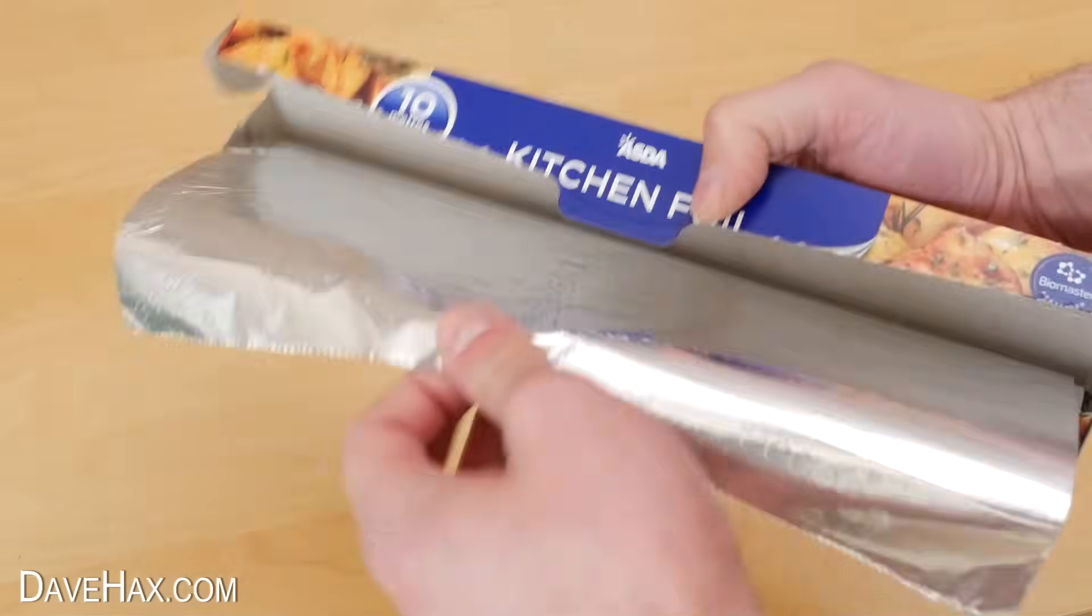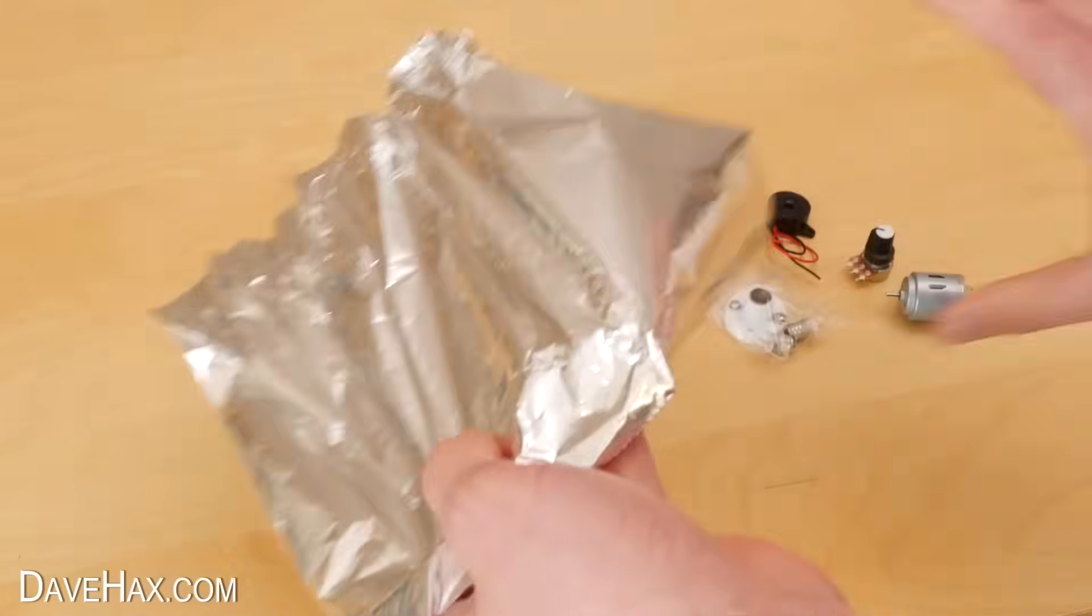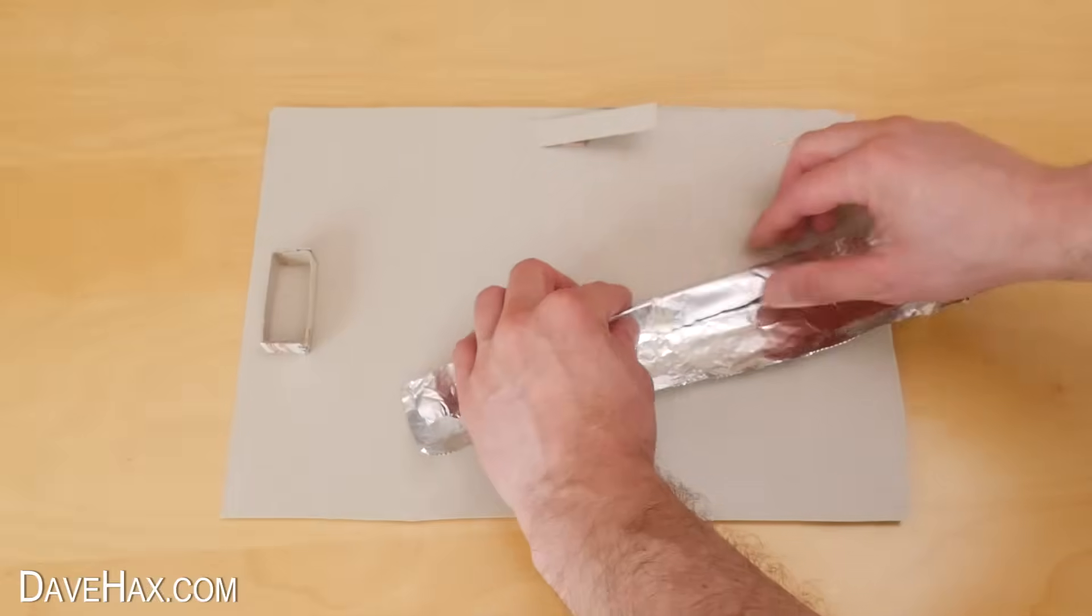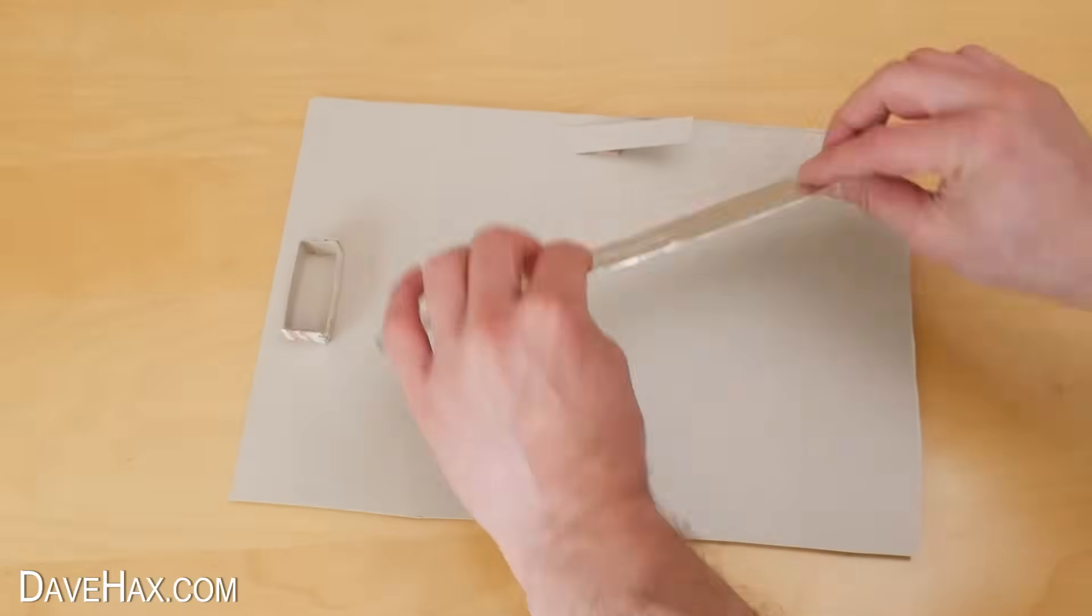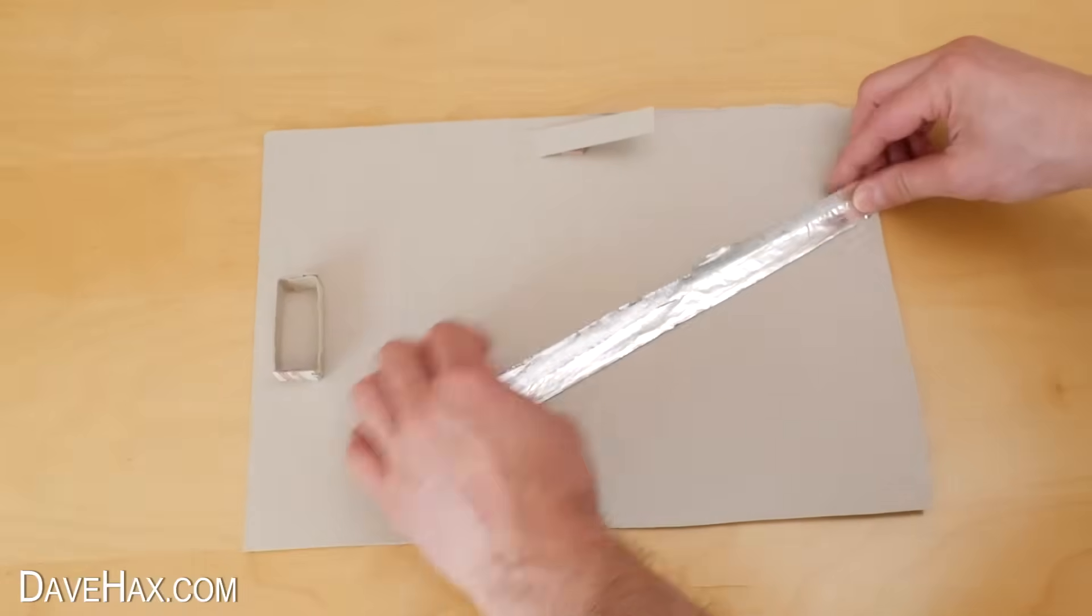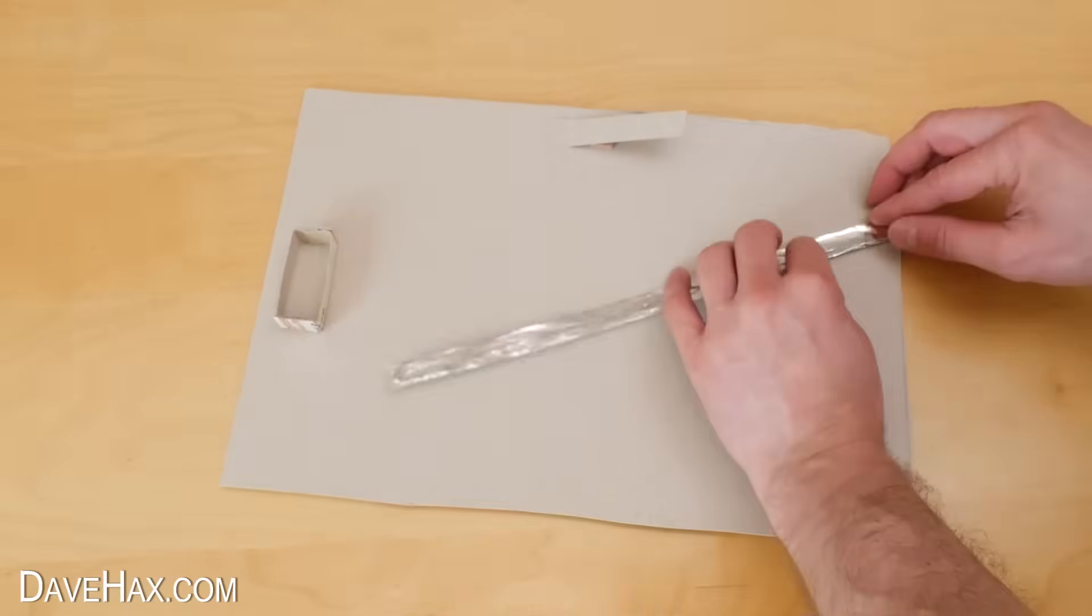Next I'm taking some kitchen foil, tearing off a strip and this piece is actually a bit big so I'm tearing it in half. We need to fold it over and over so we have a thin strip about a centimeter wide. We need to make a whole load of strips like this and we'll be using them to build the circuit.